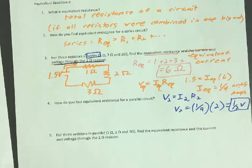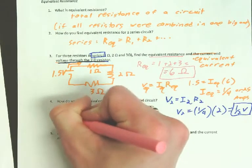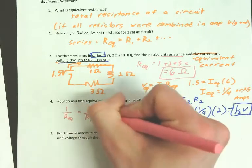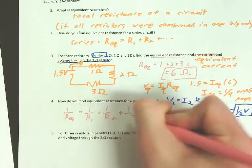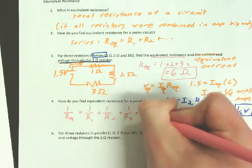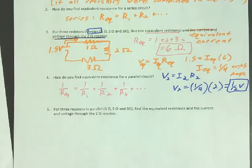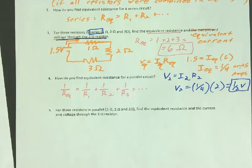So for parallel, it's 1 over everything. 1 over R equals 1 over R1 plus 1 over R2 plus 1 over R3 plus whatever. So let me show you how to do the last part here.